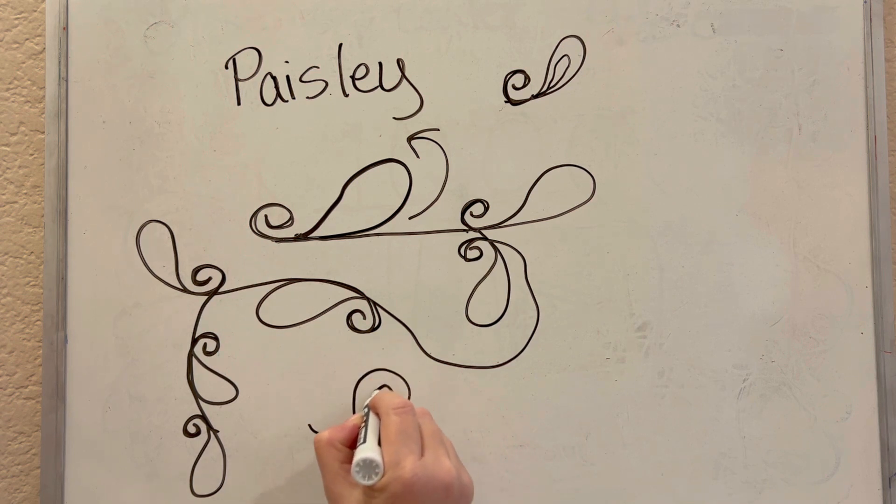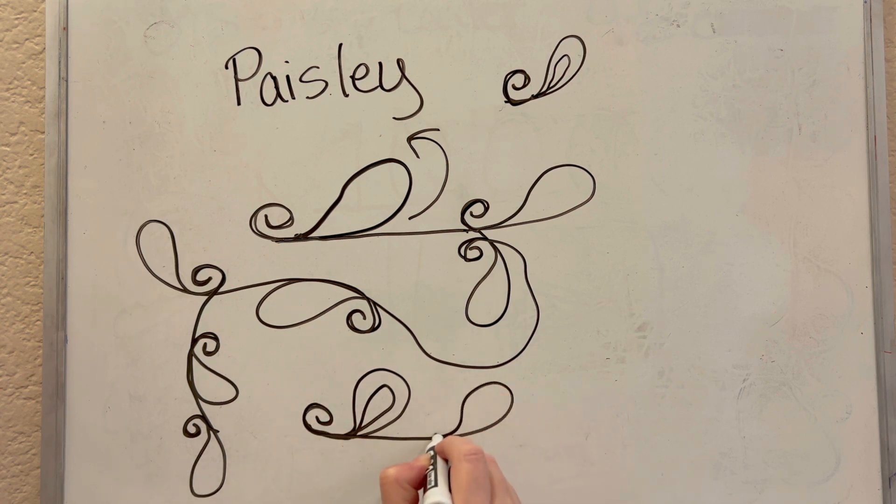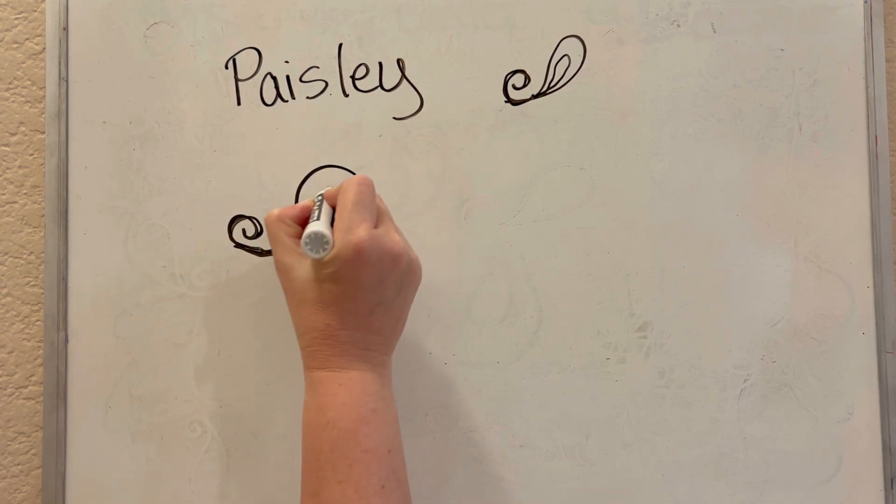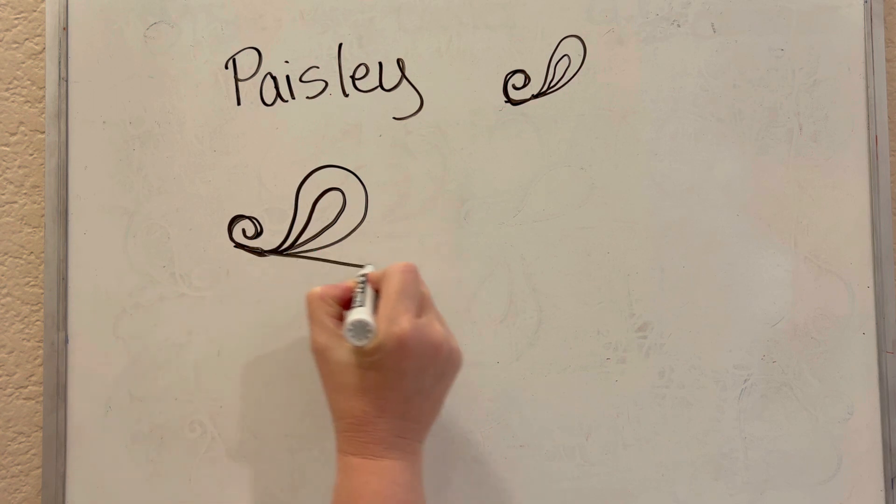Now you can start adding different elements to your paisley. You can fill it in with a double bubble there. The plain bubble looks kind of empty, so we can fill that up with other designs.